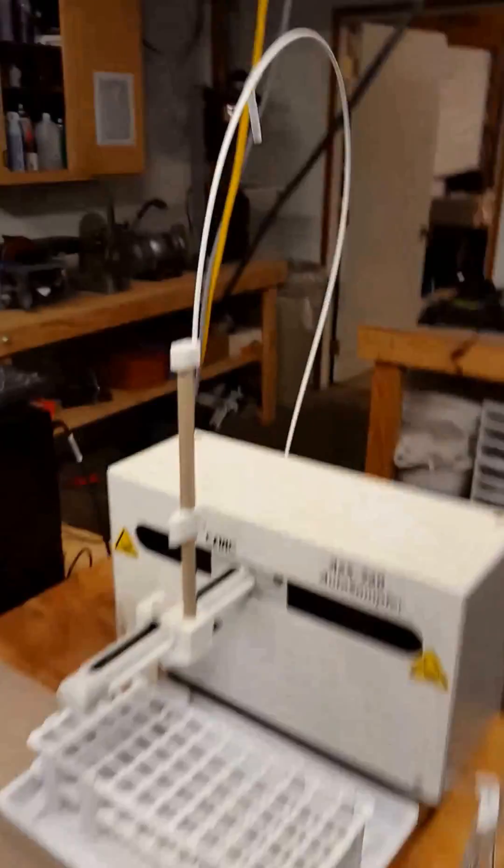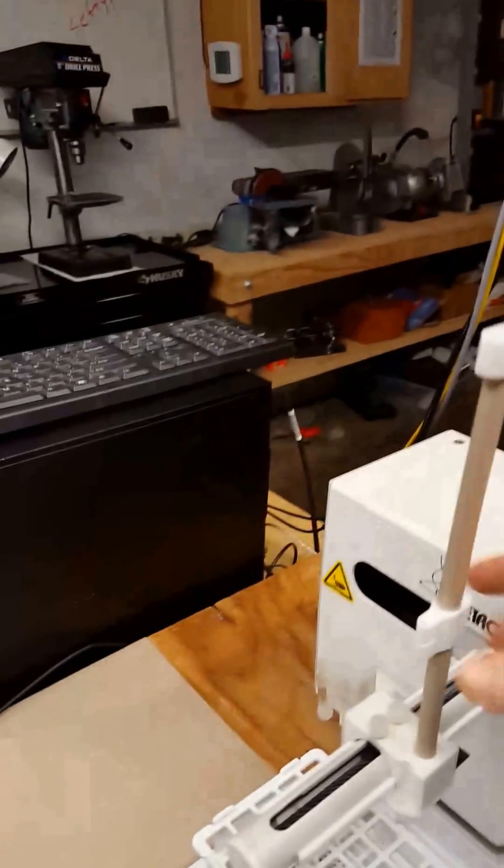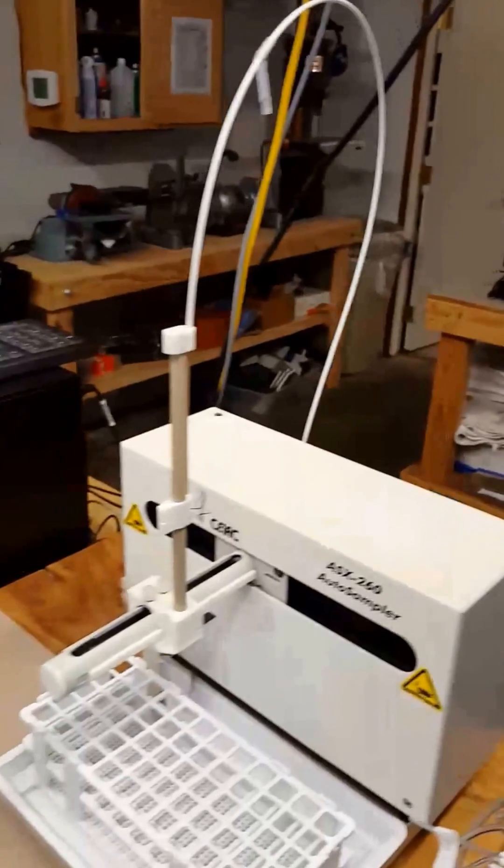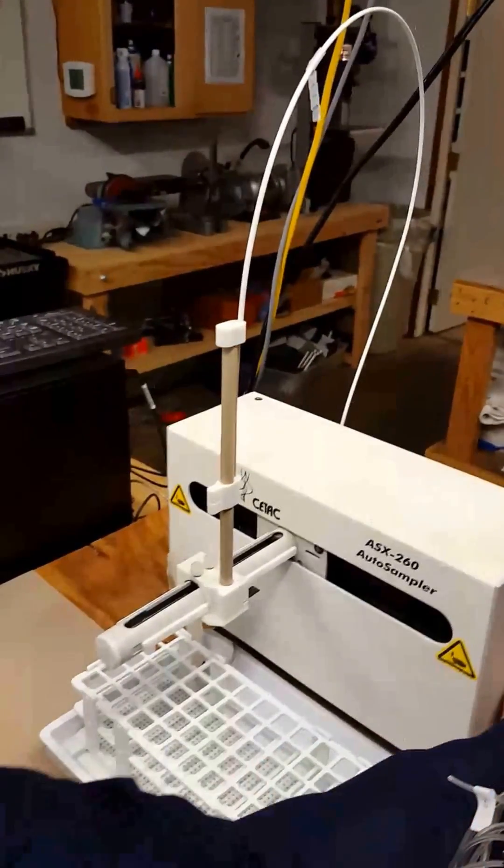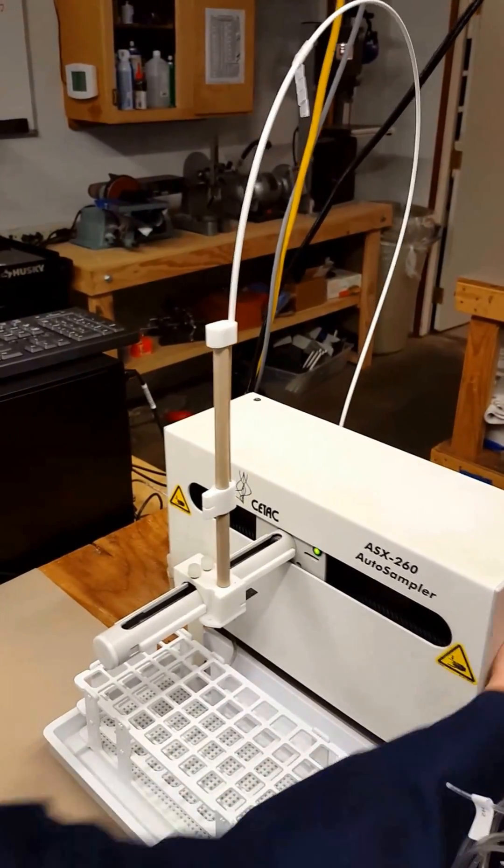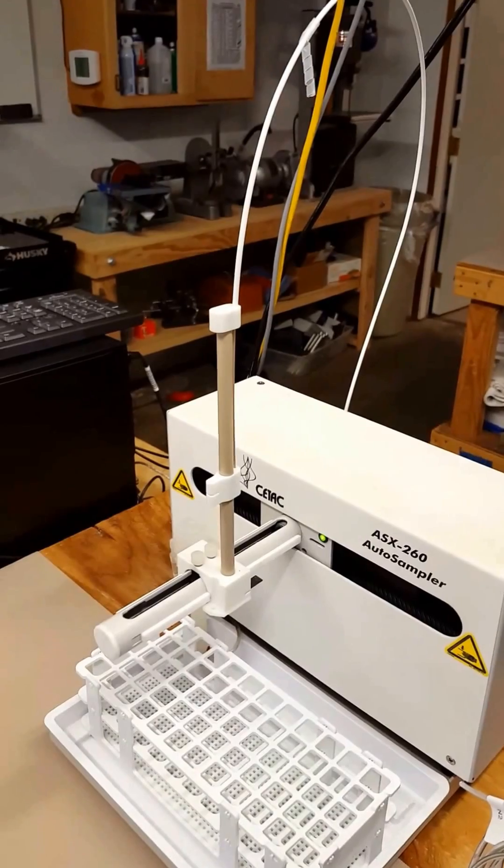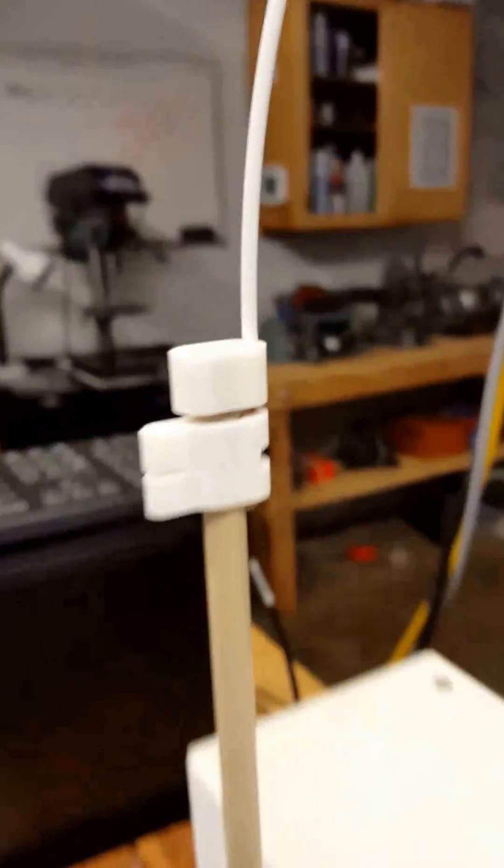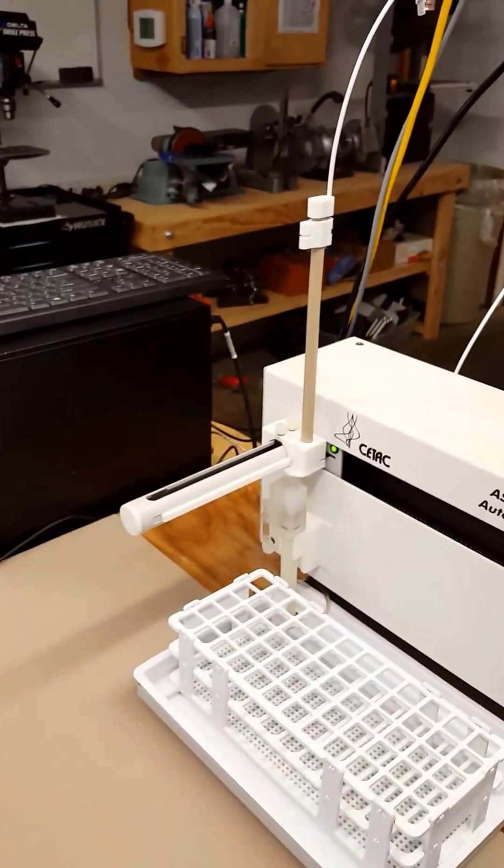First, after installing the probe arm assembly and adjusting the wheel in the back, turn the power on. You'll notice the probe arm assembly goes to the home position with a gap of one to three millimeters. Once that's set up, proceed to feed the probe.